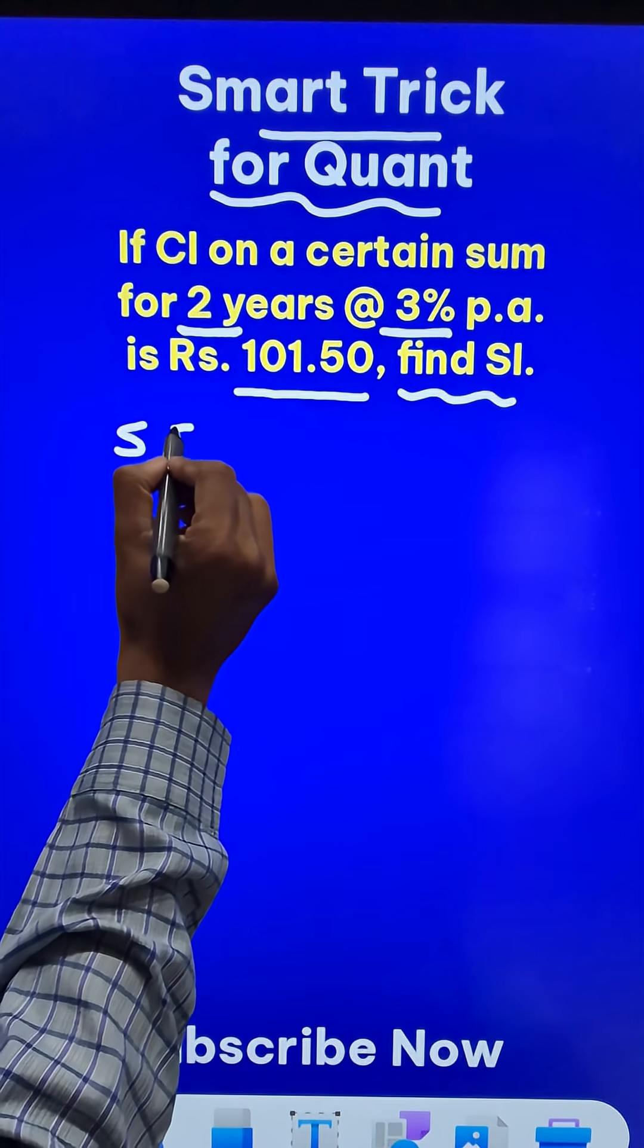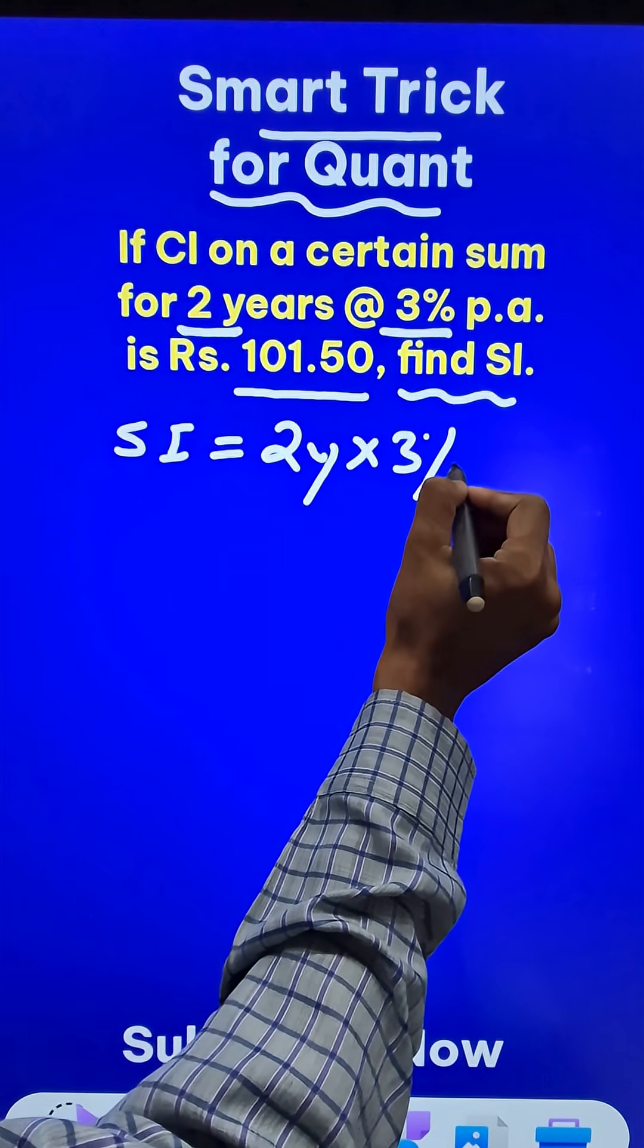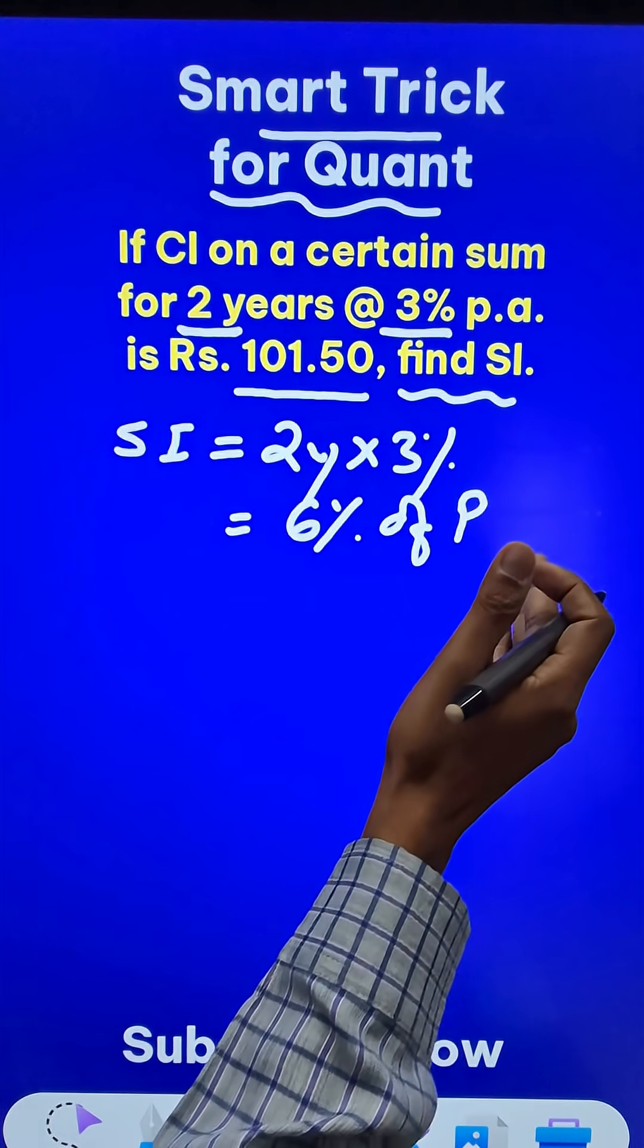So the simple interest will be 2 years, that is 2y multiplied by 3%, and that will come to be 6% of the principal amount, that is the money borrowed or lent.